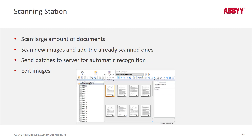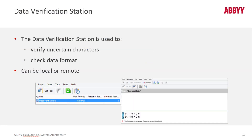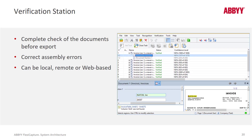The scan station allows you to scan large amounts of documents using a GUI. The data verification station is designed for people who are fast at data entry — they can adjudicate low-confidence characters and resolve some rule violations. Complex verification is usually done in the verification station. It's often a two-pass effort: data verification happens first to knock out low-confidence characters, and any remaining rule violations are handled by a verification station operator. You can also skip data verification and perform all steps directly in the verification station.